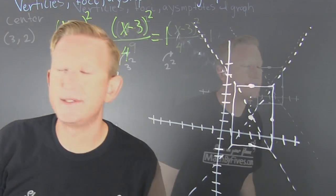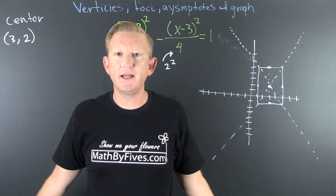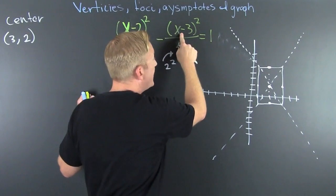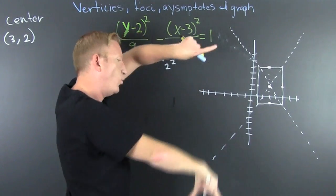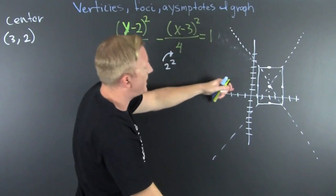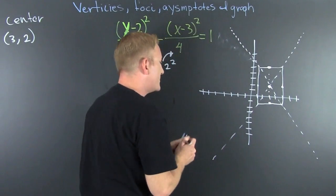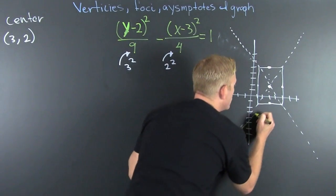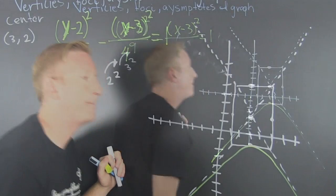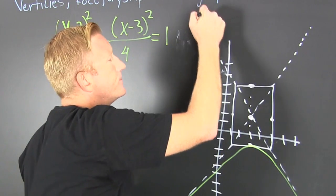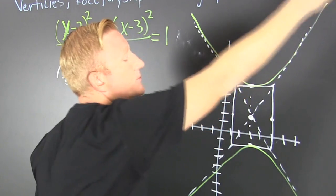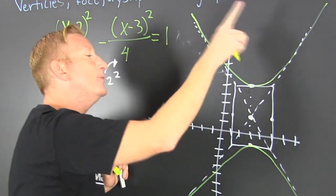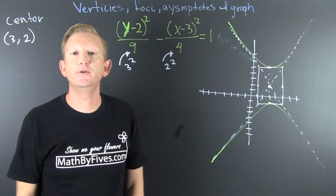Now we figure out which way it opens. It opens away from the negative variable. Which one is the negative variable? The minus sign is in front of the x, so it opens away from x. It opens up and down away from x — it comes from this asymptote and kisses the box right there.